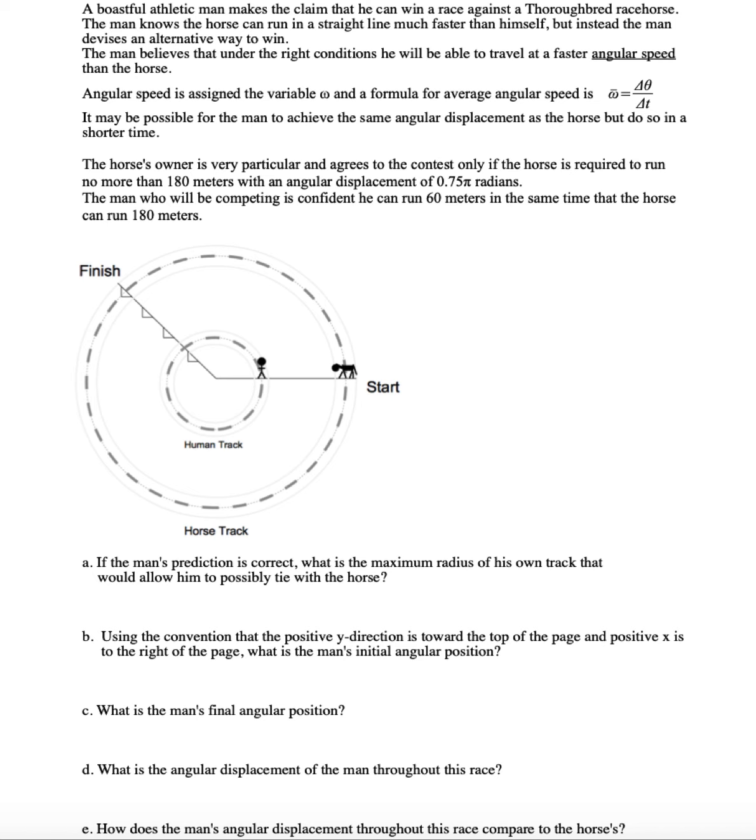So if the man's prediction is correct, what is the maximum radius of his own track that he should set so that he can possibly tie with the horse? All right, there's a lot to this problem. They said that the arc length of the horse was going to be 180 meters - that would be the distance from the horse to the finish. The man wants to run 60 meters though.